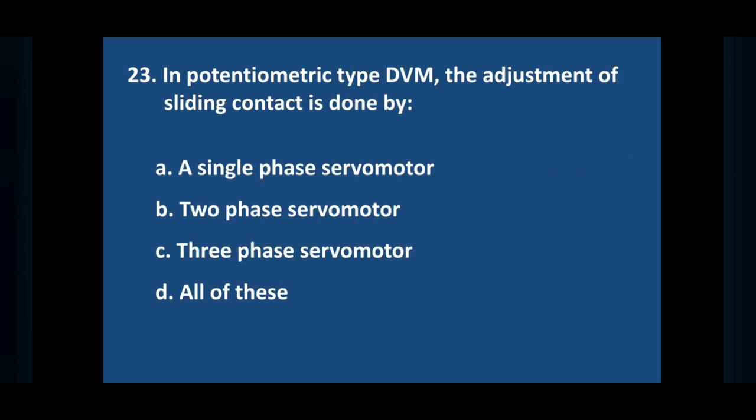Question number 23: in a potentiometric type DVM, the adjustment of sliding contact is done by. Answer is option B, two-phase servo motor.